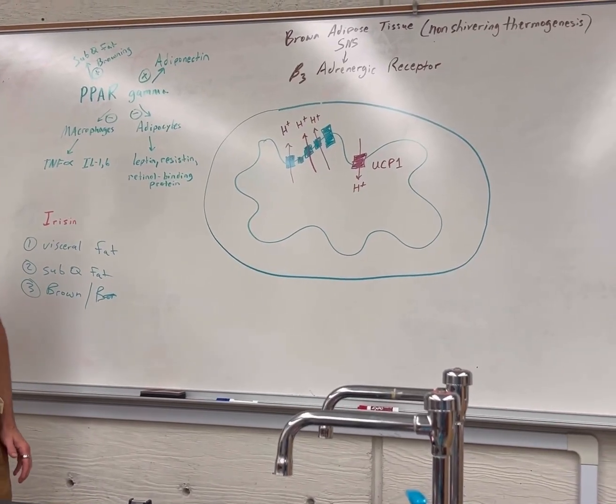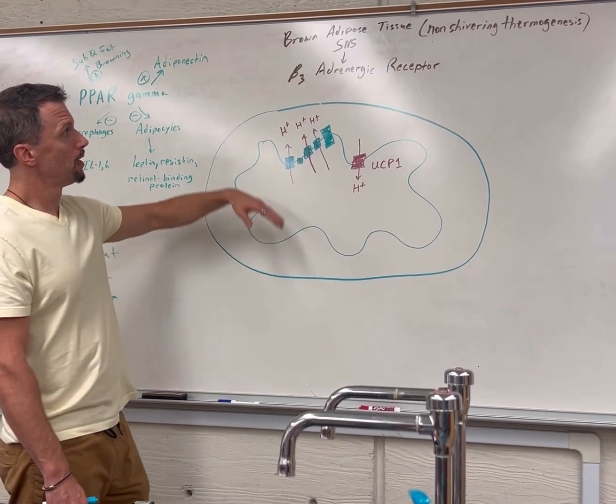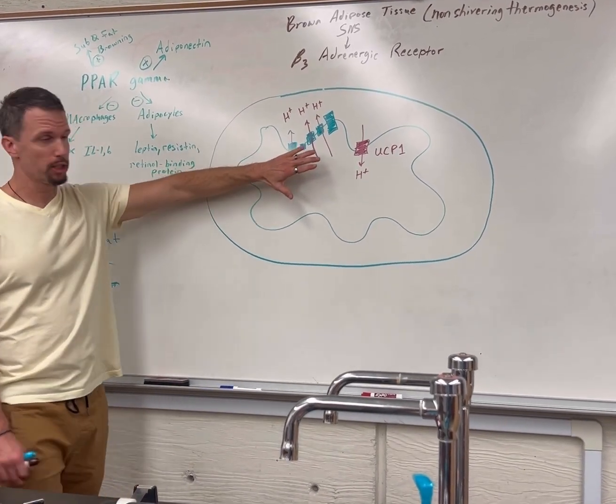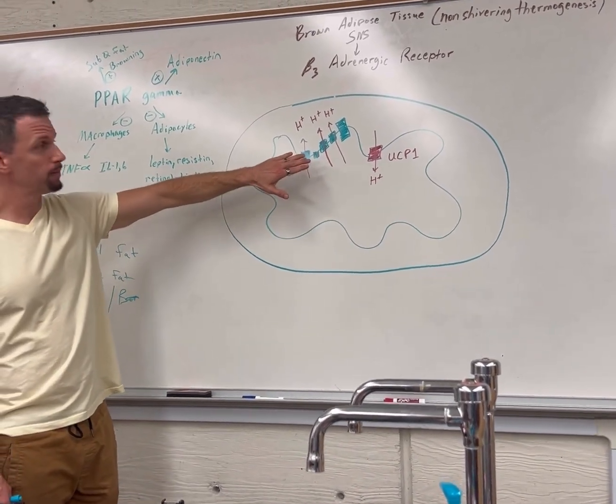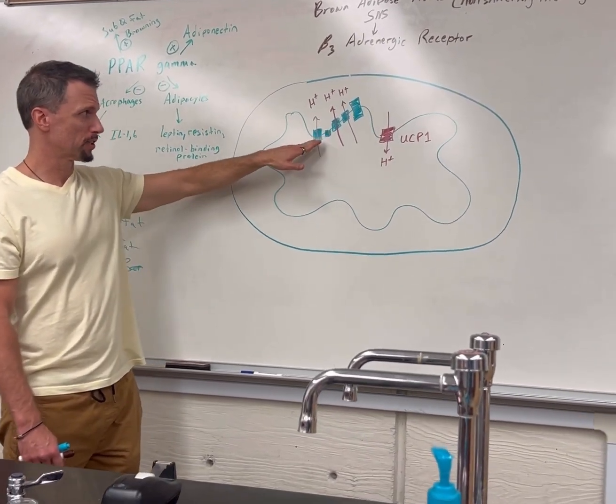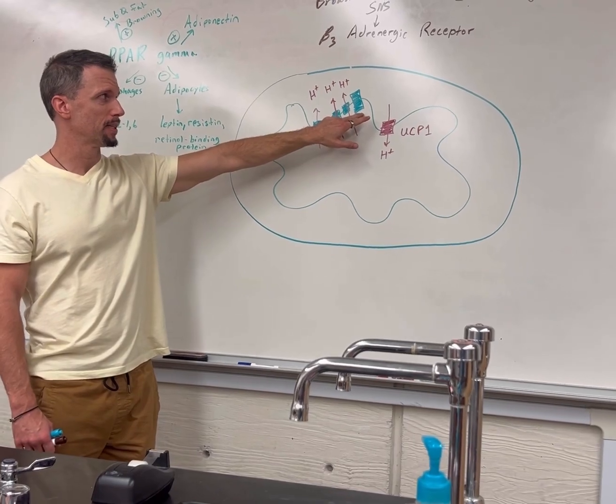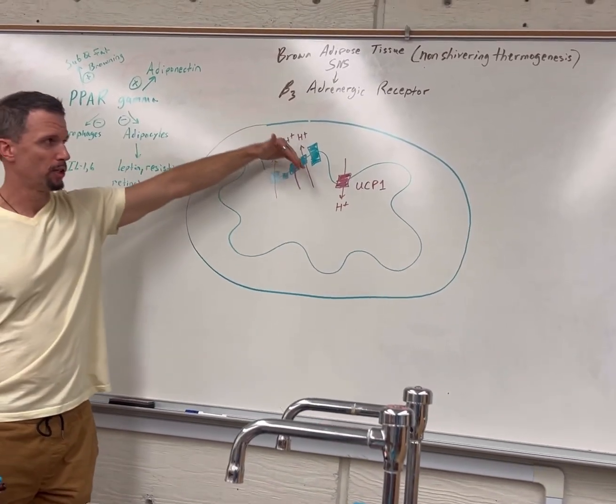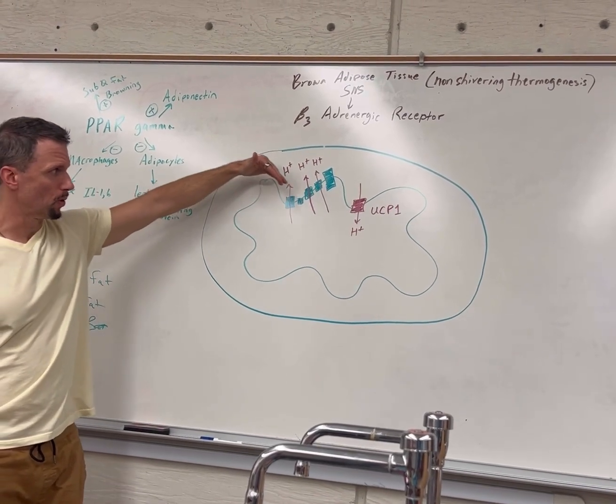Brown adipose tissue has an electron transport chain in the inner membrane of the mitochondria. This represents the four complexes and ATP synthase. We get a payoff of ATP when you have oxidative phosphorylation going on.